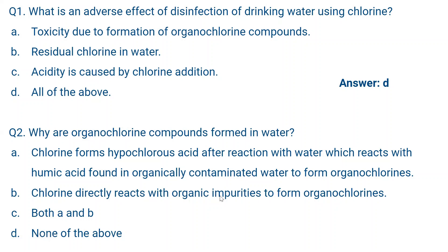Option B states that chlorine directly reacts with organic impurities to form organochlorines — but that is not correct. Chlorine first forms hypochlorous acid, and then hypochlorous acid reacts with organic impurities to form organochlorines. The correct answer is A.